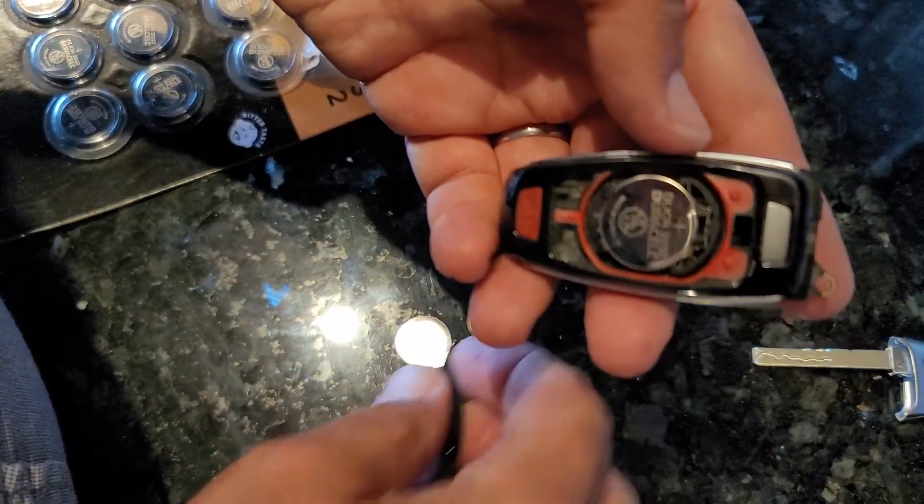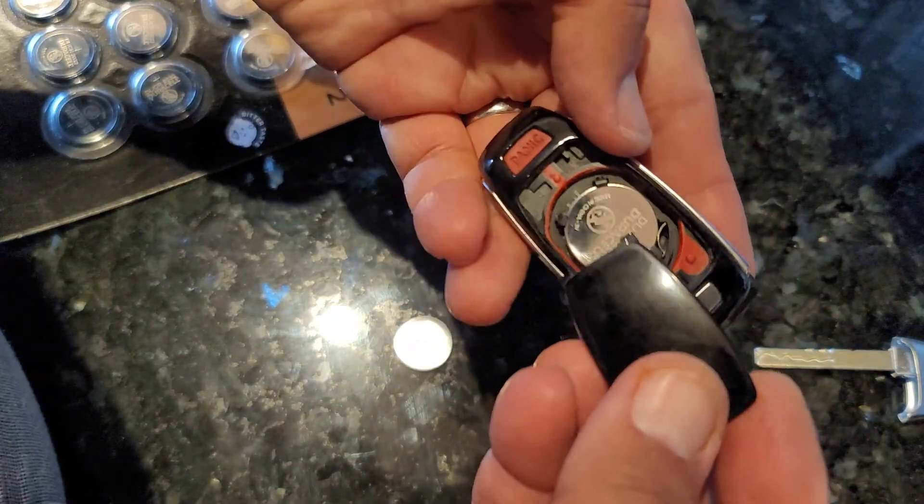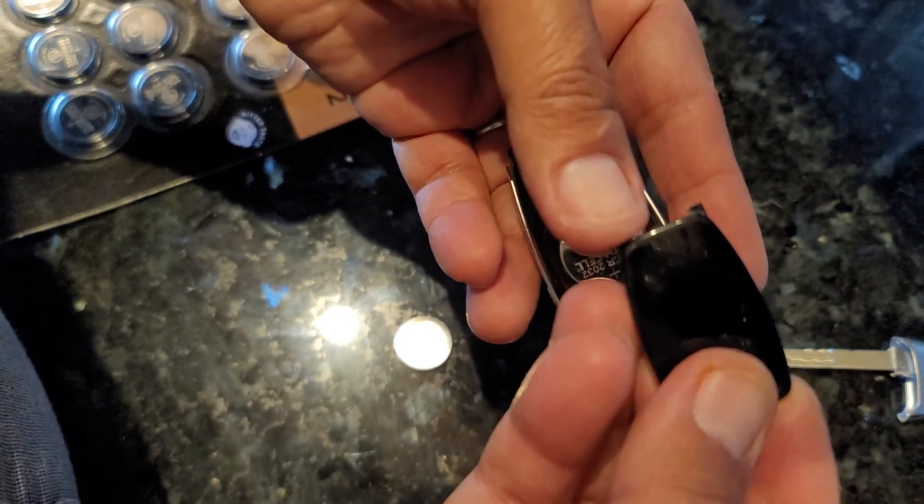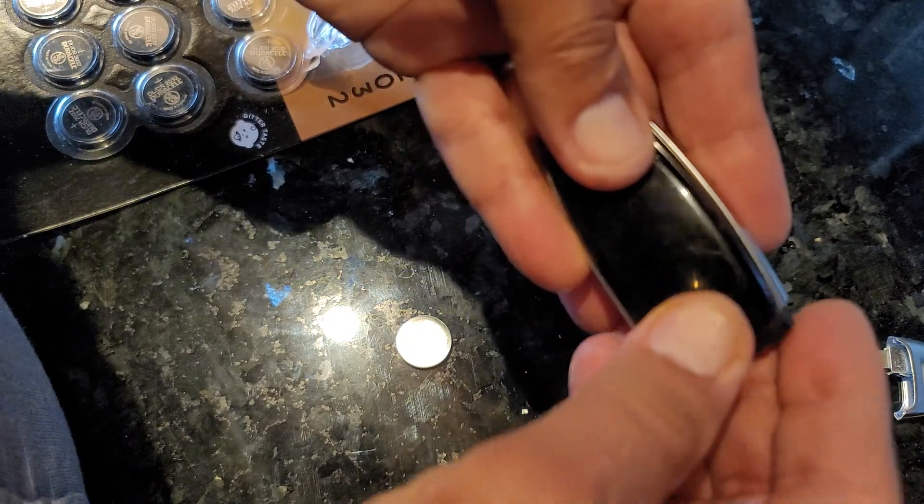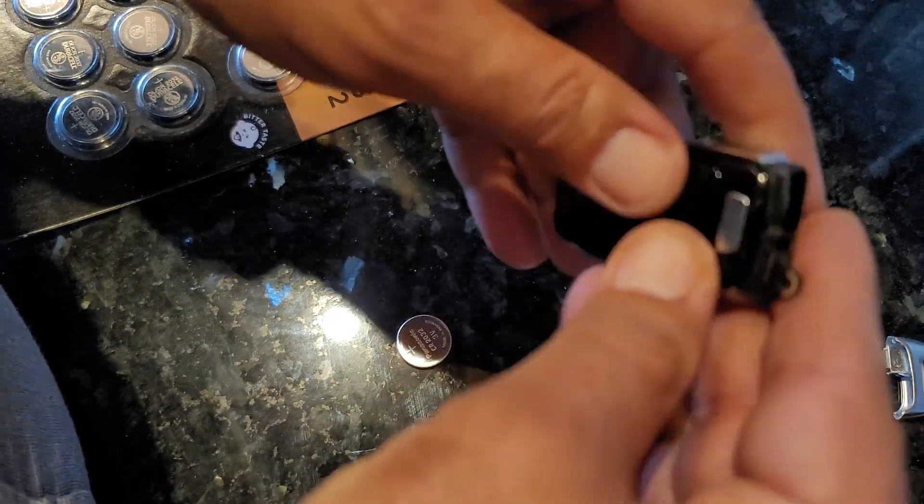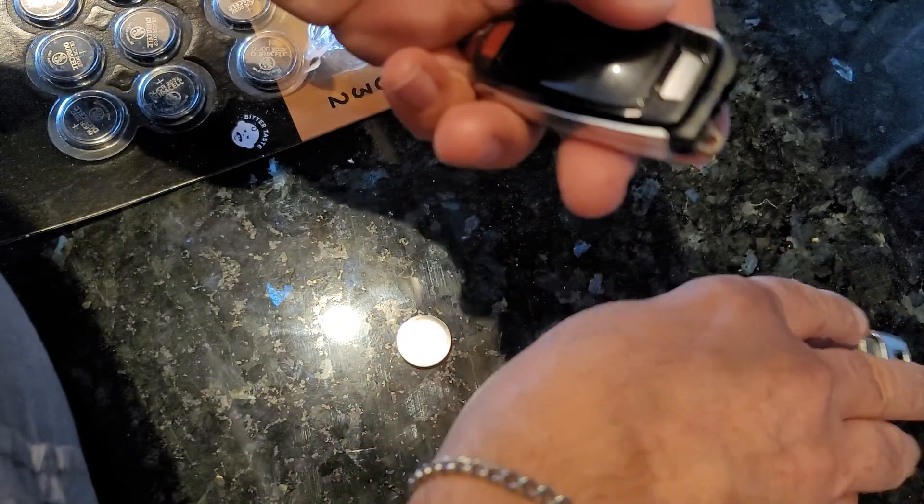And then the way you put the back cover on is it's got these two tabs. These two tabs go in there first, and then you just push it in. And that's it. It's done.